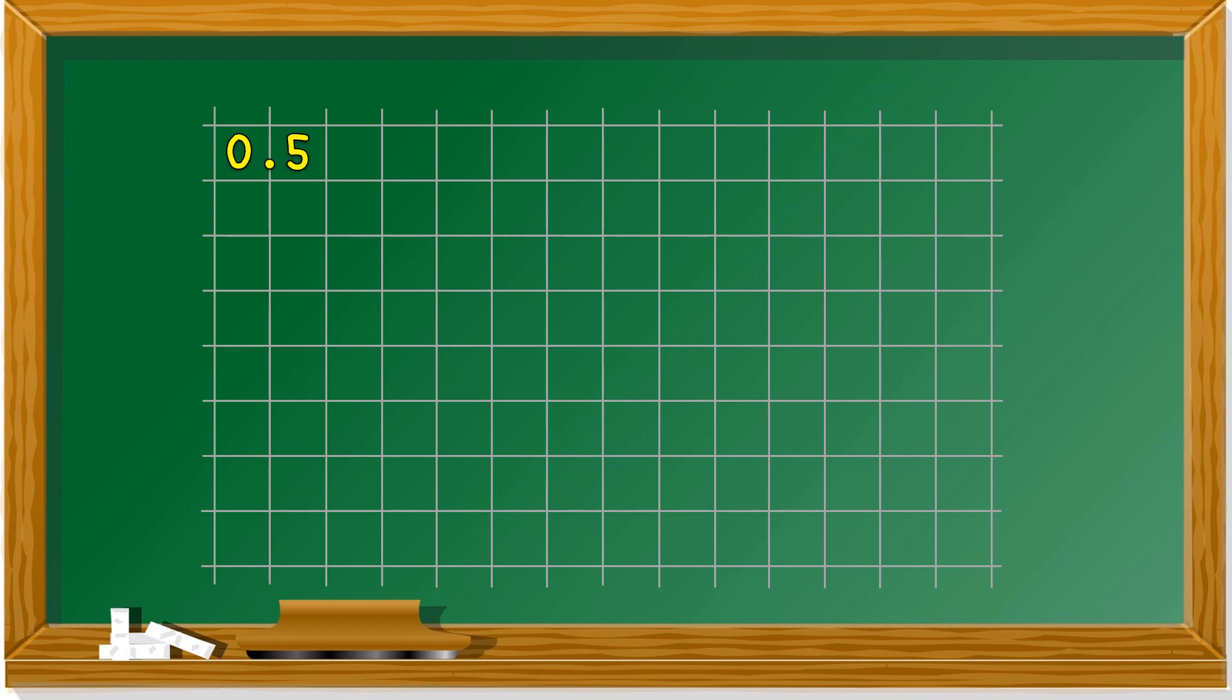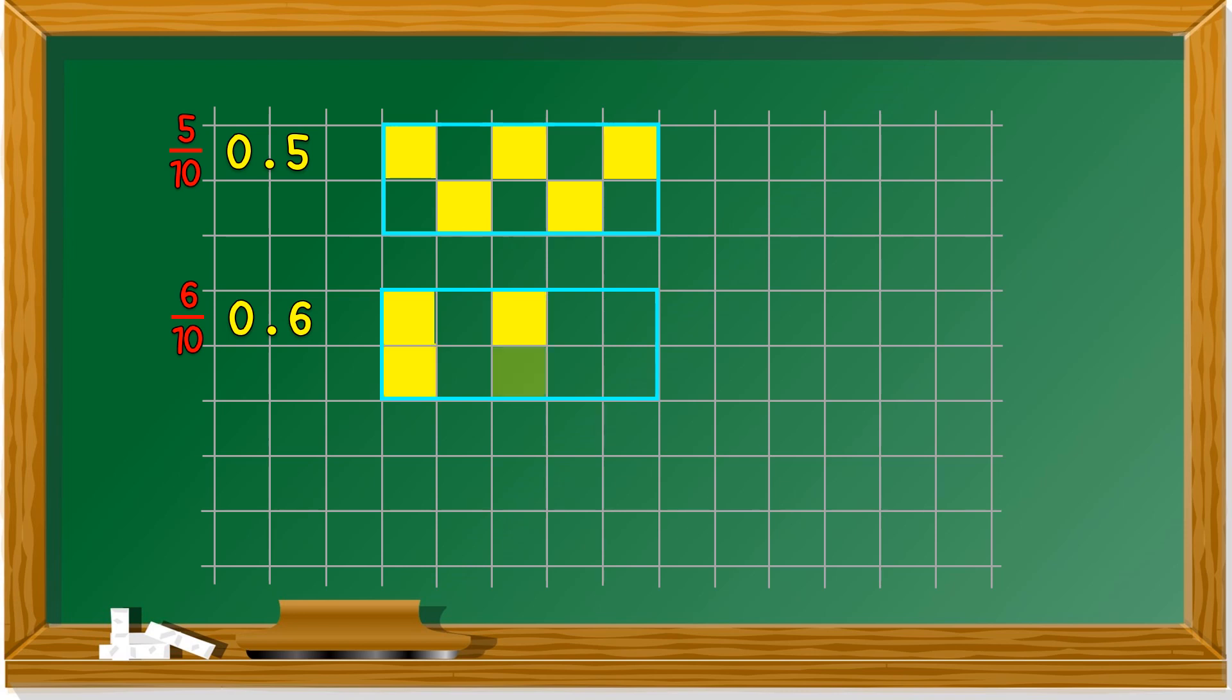0.5, the fraction is 5 over 10. You can also draw 10 parts like this and you color 5 parts. So this is 0.5. 0.6, the fraction is 6 over 10. 10 parts, you color 6 parts. It's up to you which one you would like to color as long as you color the parts correctly.